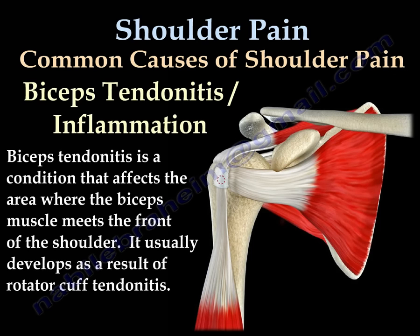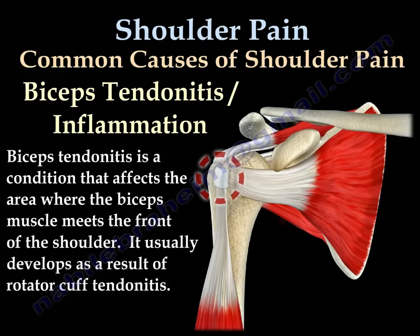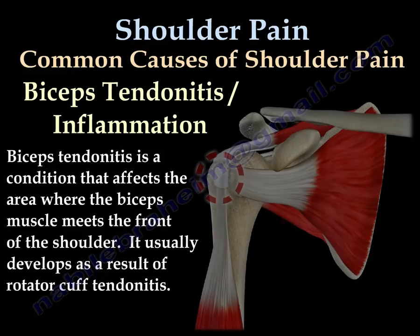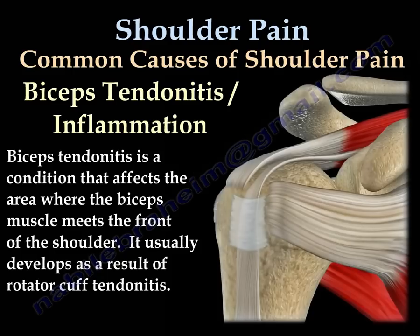Biceps tendonitis is a condition that affects the area where the biceps muscle meets the front of the shoulder. Tendinitis of the biceps usually develops as a result of rotator cuff tendonitis.